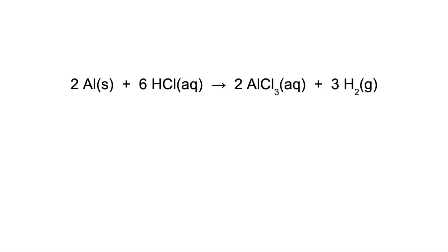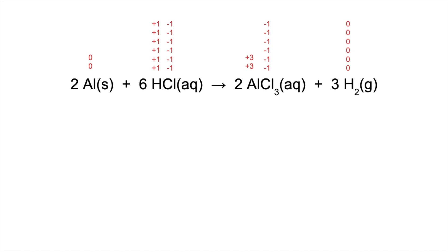The first example is the redox reaction between aluminium and hydrochloric acid. You can pause the video and establish the oxidation and reduction processes, both in terms of oxidation number first and then electrons second. Starting with oxidation number, the first thing to do is put all the oxidation numbers above all of the species in the redox reaction.